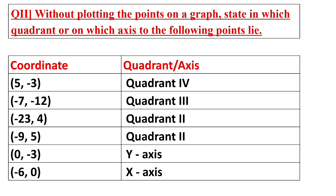Second point (-7, -12): both coordinates are negative, so it lies in the third quadrant. Third point (-23, 4): x is negative and y is positive, so it lies in the second quadrant. Fourth point (-9, 5): x is negative and y is positive, so it lies in the second quadrant. Fifth point (0, -3): x coordinate is zero, so it lies on the y-axis. Sixth point (-6, 0): y coordinate is zero, so it lies on the x-axis.